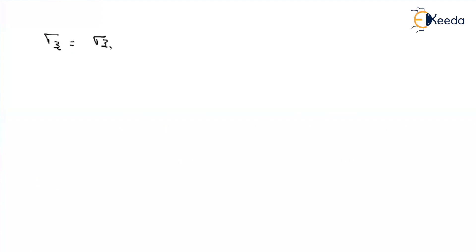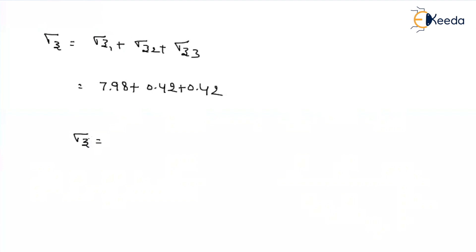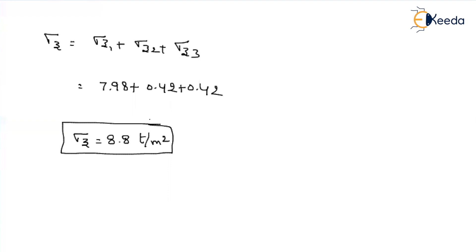The total stress under any one column is sigma Z = sigma Z1 + sigma Z2 + sigma Z3 = 7.98 + 0.42 + 0.42 = 8.82 tons per meter square. The key thing to remember is that r is the radial distance from the load-acting point to the point where you are finding stress, viewed from the top. In most cases, mistakes happen only in finding the r value. Make sure you look at the top view and take the correct radial distance.